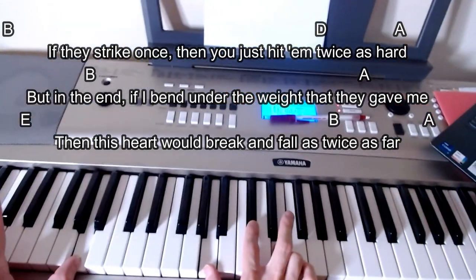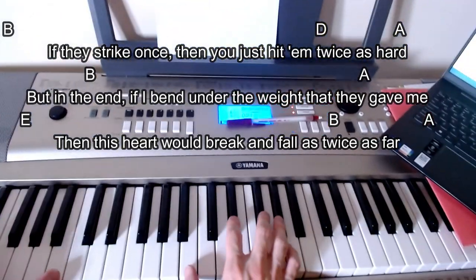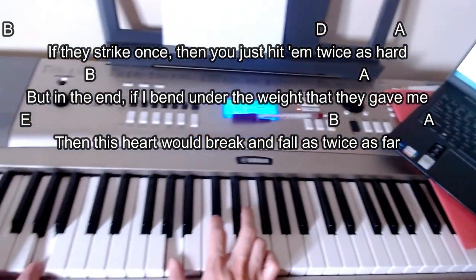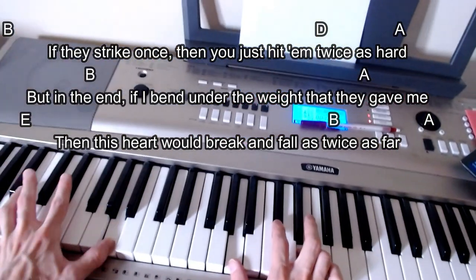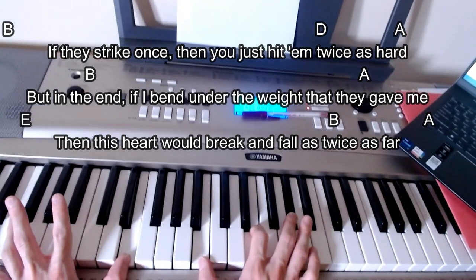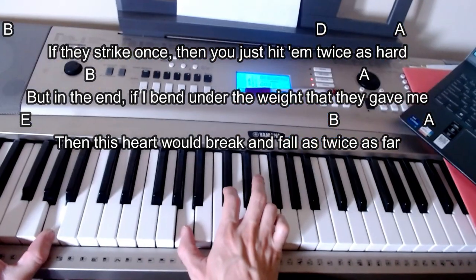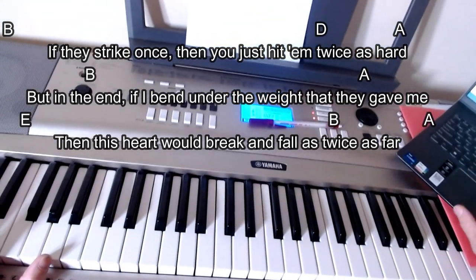I think that D is there. I think it is, but if not, hang on that B, then just go to that A, because the next line is, but in the end, if I bend under the weight they gave me, then this heart would break and fall just twice as hard. That B is there at the end of that line.